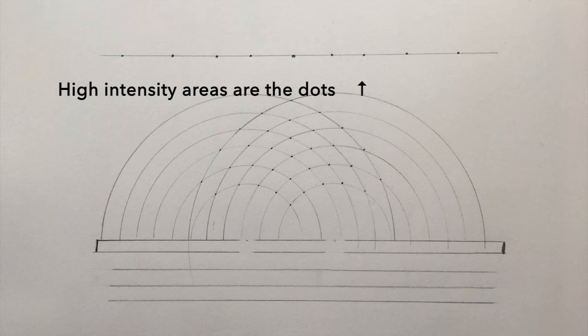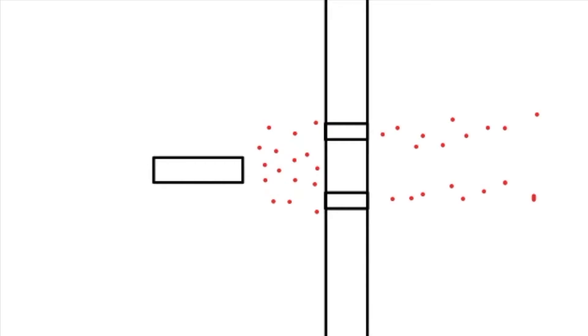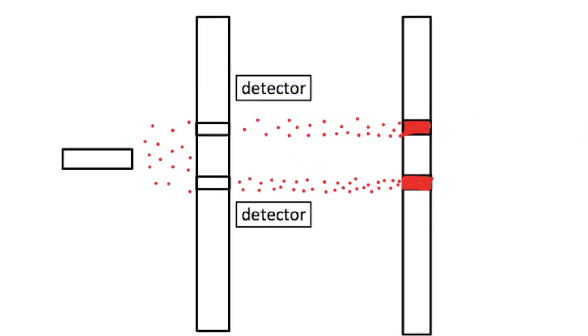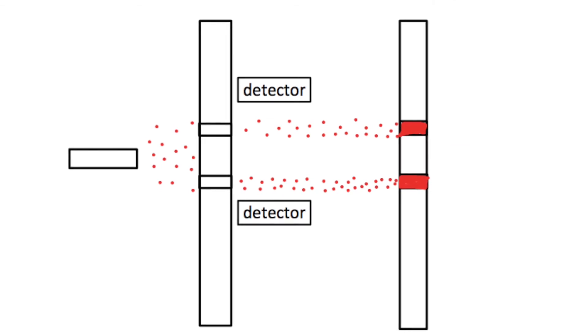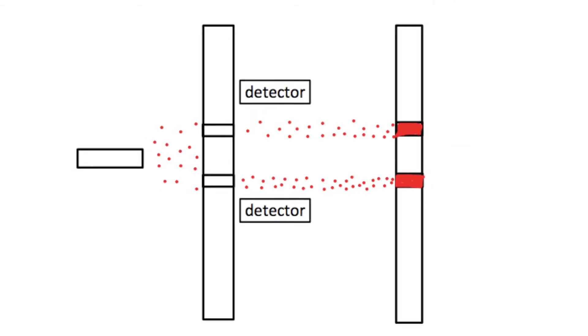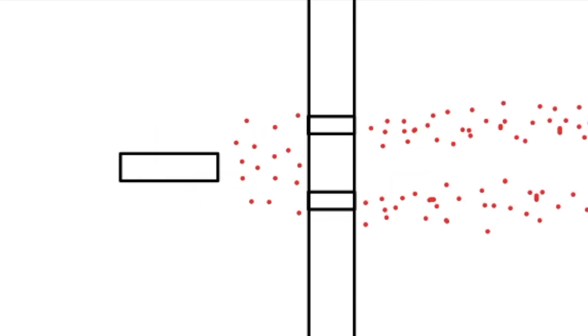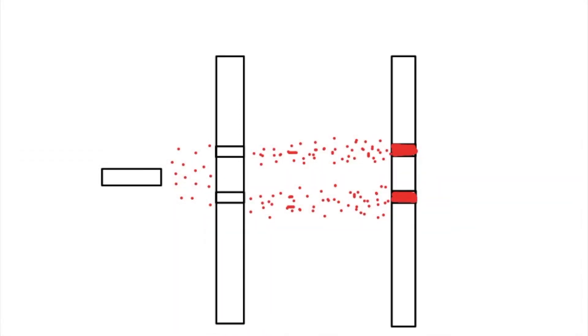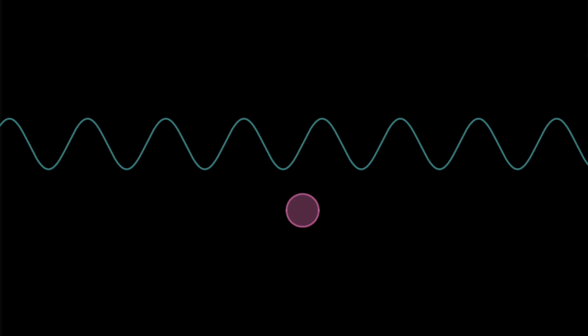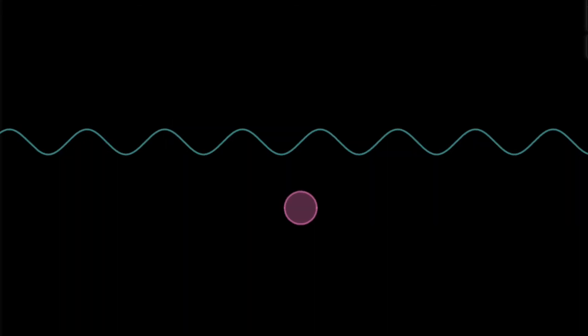These are the low intensity areas. When this experiment was done again but with detectors behind the slits so that the wave interaction can be observed, light decided to act like a particle and formed two slits on the screen this time. This also helps us prove the wave particle duality of light.